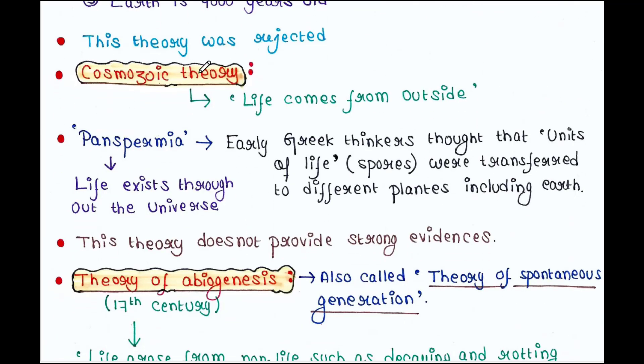Next is cosmozoic theory. This theory states that life comes from outside. Early Greek thinkers thought that units of life called spores were transferred to different planets including Earth. This is called panspermia, which means life exists throughout the universe. This theory does not provide strong evidences hence gets rejected.